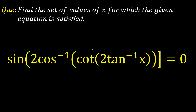Hello everyone. Today we're going to look at a cool problem from inverse trigonometric functions. The question is: find the set of values of x for which the given equation is satisfied. The equation is sin(2·cos⁻¹(cot(2·tan⁻¹(x)))) = 0, and we have to find the values of x satisfying this equation.